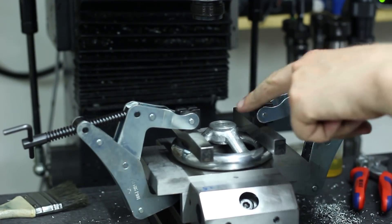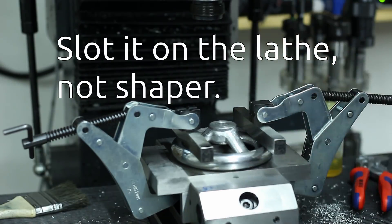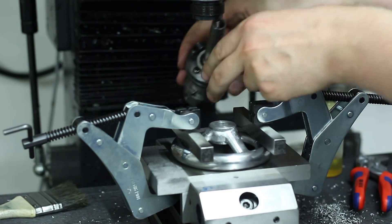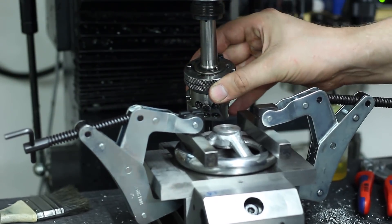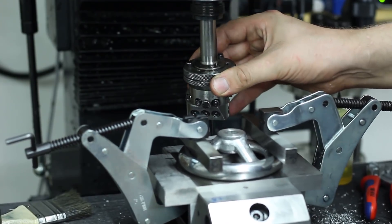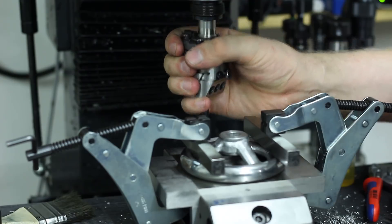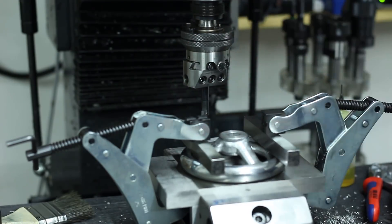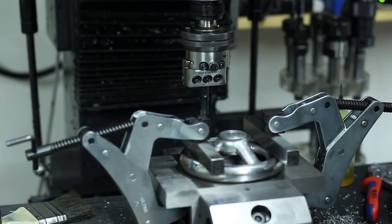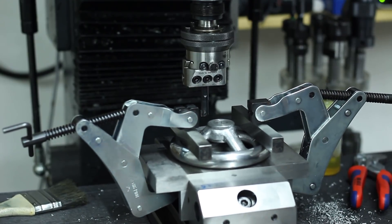You could also do it on the lathe and slot it on the shaper with the same tool I showed before, held in a quick change tool holder for a lathe and slotted that way. But work holding wise I find this faster on the mill. And the Wohlhaupter is always a joy to use.